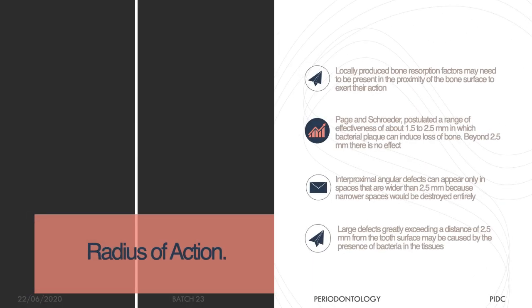What is the radius of bone destruction? For bone destruction to occur, initiating factors — bacteria or their endotoxins — must be present within a specific distance from the bone. Studies have shown that bacterial plaque must be present within 1.5 to 2.5 millimeters from the bone to induce bone destruction. If bacteria are more than 2.5 mm from the bone, bone destruction will not happen. Each periodontal pathogen has an effective radius of only about 2.5 mm.